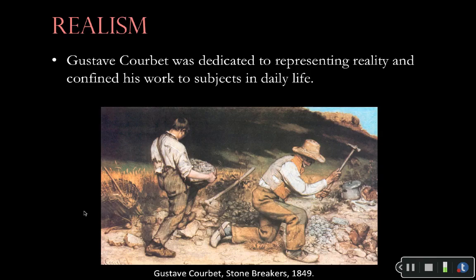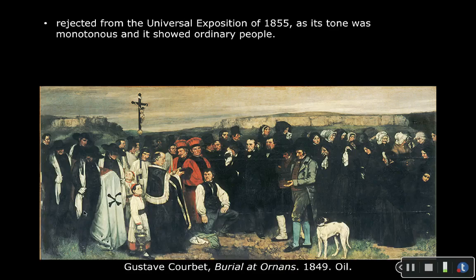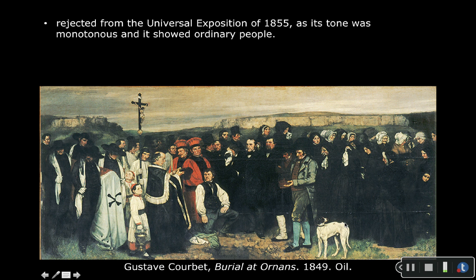There is an interest here in the everyday — real people — which is a complete rejection of the interest in nature and the sublime. Courbet's rejected painting was also enormous — I want to say it's about 12 feet long. That was another reason it was rejected: paintings that big were supposed to be historical paintings, of historical events — not ordinary people. So it was rejected for a variety of reasons, including how dare the artist create such a large painting of ordinary people at a funeral.